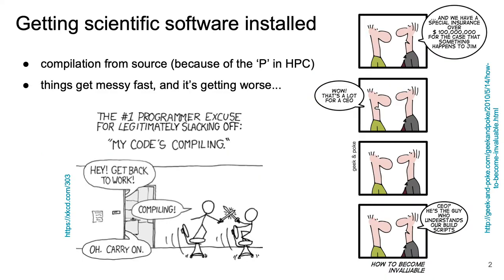Let's set the stage by briefly looking at how scientific software is typically installed on HPC systems. In this context we usually compile software from source, so we can specifically target the system on which the software will be used, which can make a significant difference in terms of performance. Getting scientific software installed tends to be quite messy — it may involve installing lots of dependencies, using very recent compiler versions, potentially combined with old source code that is not actively maintained, or very large and complex code bases. This is a widely recognized problem in the HPC community, and recently several tools have emerged to help deal with this. In this talk I'll briefly cover two of them: EasyBuild and SPAC.